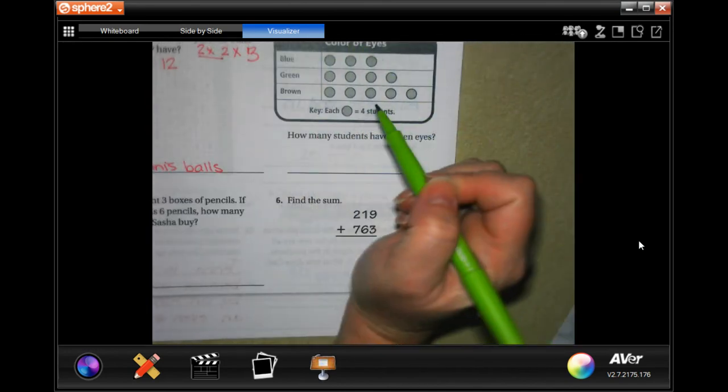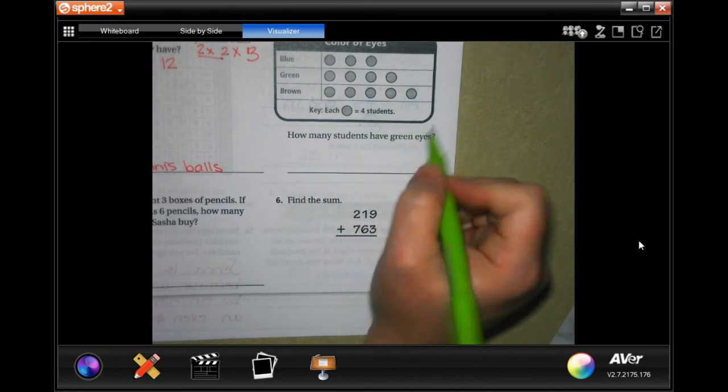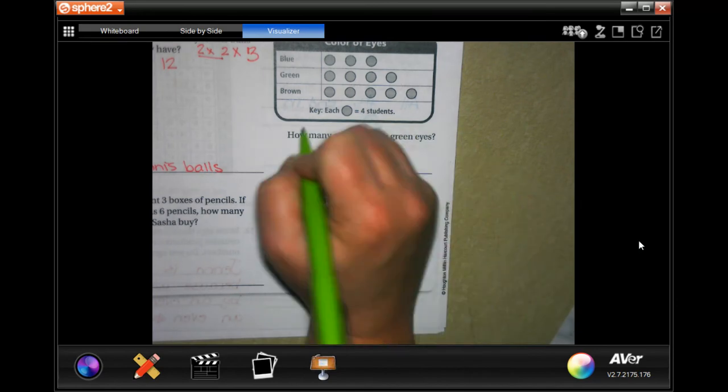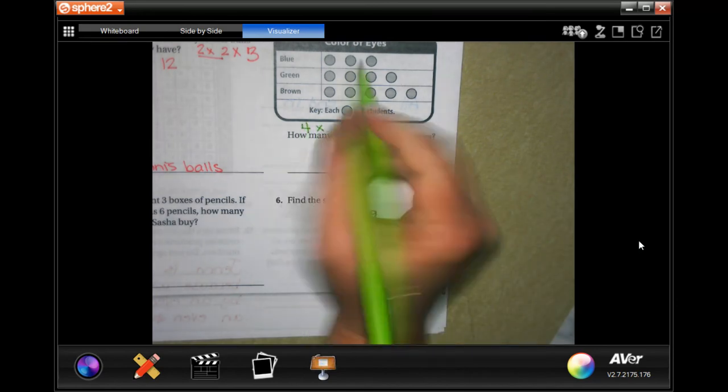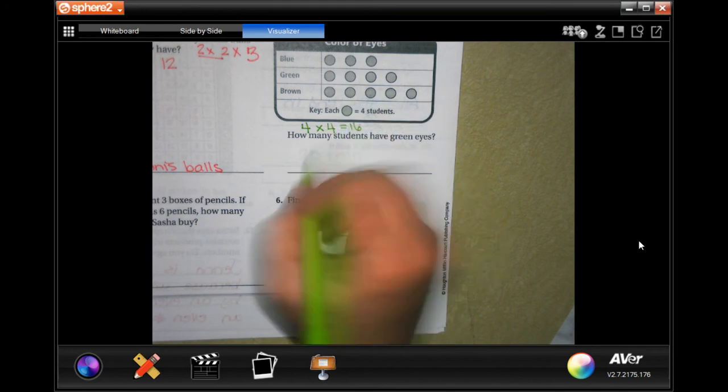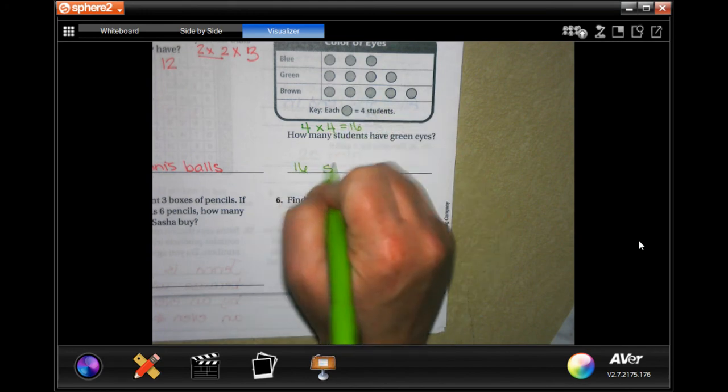Use the picture graph: how many students have green eyes? Well, each one of those circles is worth four students, so it's going to be four times however many dots there are here. There's four dots. Well, four times four is 16, so 16 students.